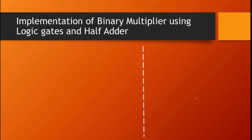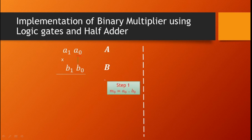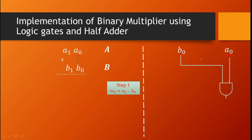Looking at the implementation: number A has two bits A0 and A1, and number B has two bits B0 and B1. Step 1 is A0 into B0 — this is implemented using an AND gate with A0 as first input and B0 as second input. The AND gate output is M0. This is our Step 1 — very simple.